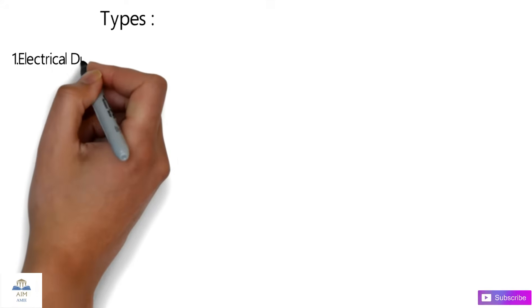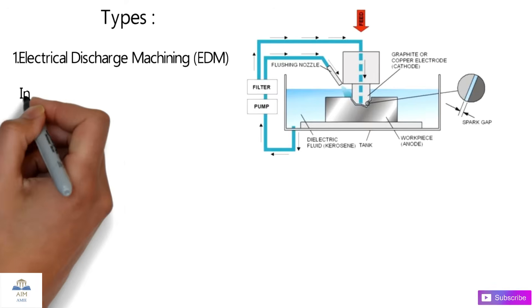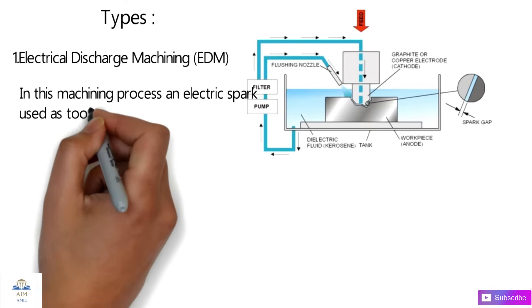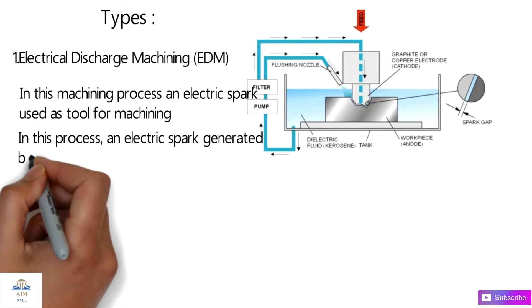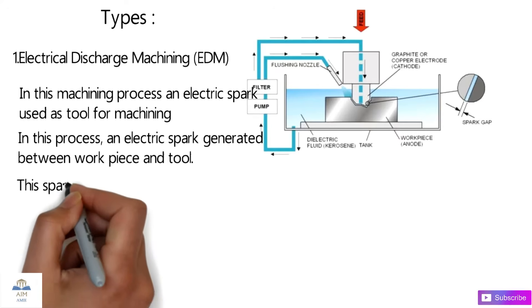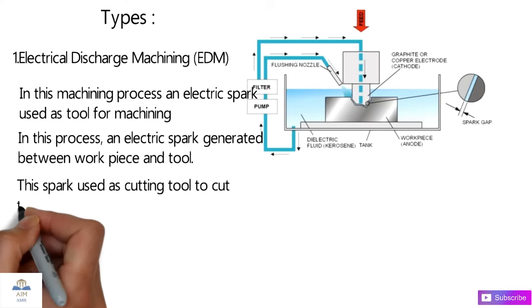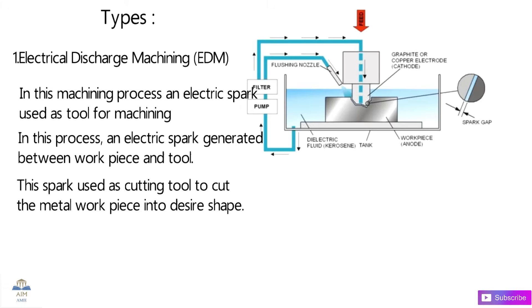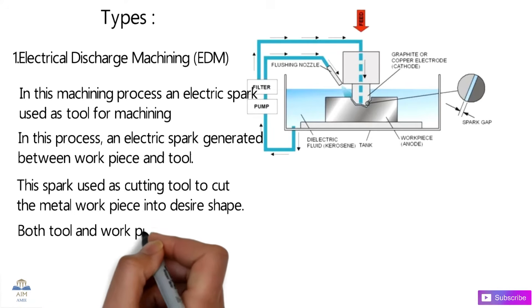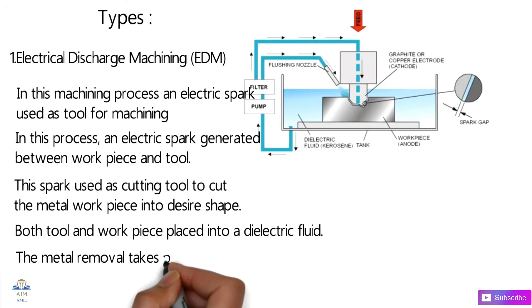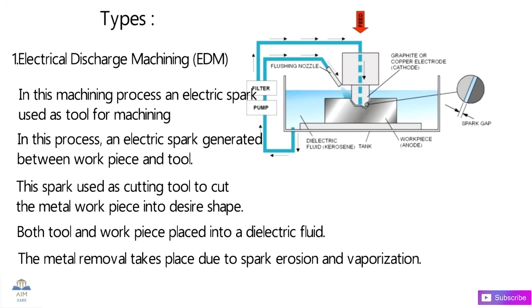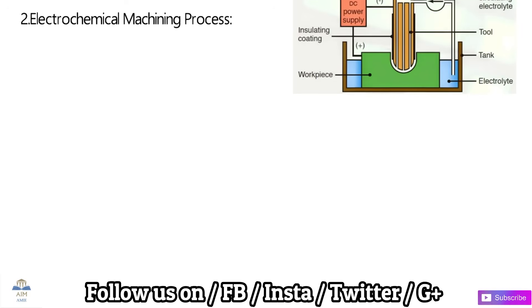The first type of non-traditional machining is Electrical Discharge Machining, also called EDM. In this process an electrical spark is used as a tool for machining. The electric spark is generated between the tool and the workpiece, and this spark acts as a cutting tool to form the workpiece into the desired shape. Both the tool and workpiece are placed in a dielectric fluid, which can be brine or NaCl solution, and metal removal takes place due to spark erosion and vaporization.